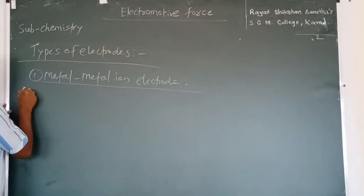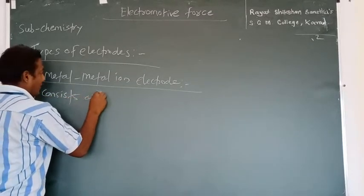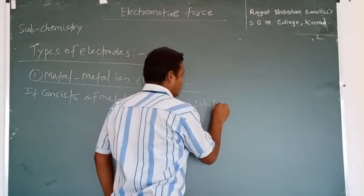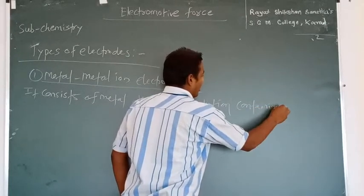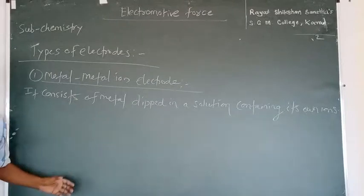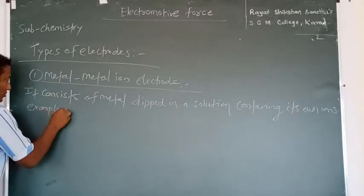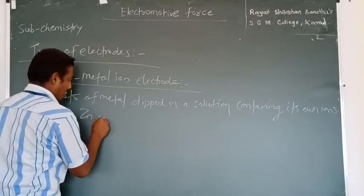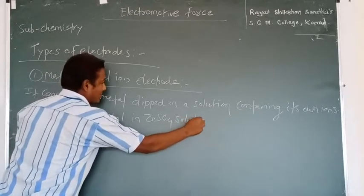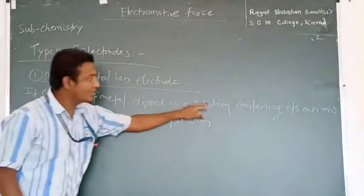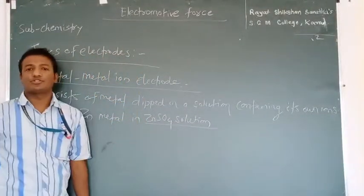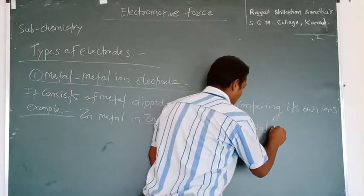We will start with the metal-metal ion electrode. It consists of a metal dipped in a solution containing its own ions. For example: zinc metal in zinc sulfate solution — zinc is the metal dipped in a solution of its own ions, and zinc sulfate provides those ions. One more example is copper metal in copper sulfate solution.